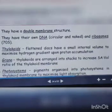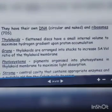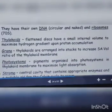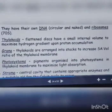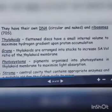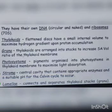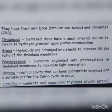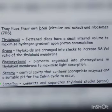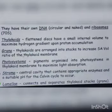Looking at the internal structure, chloroplasts have thylakoids, grana, photosystems, and stroma. Thylakoids are flat, disc-shaped structures with internal volume so they can maximize the hydrogen gradient upon proton accumulation.